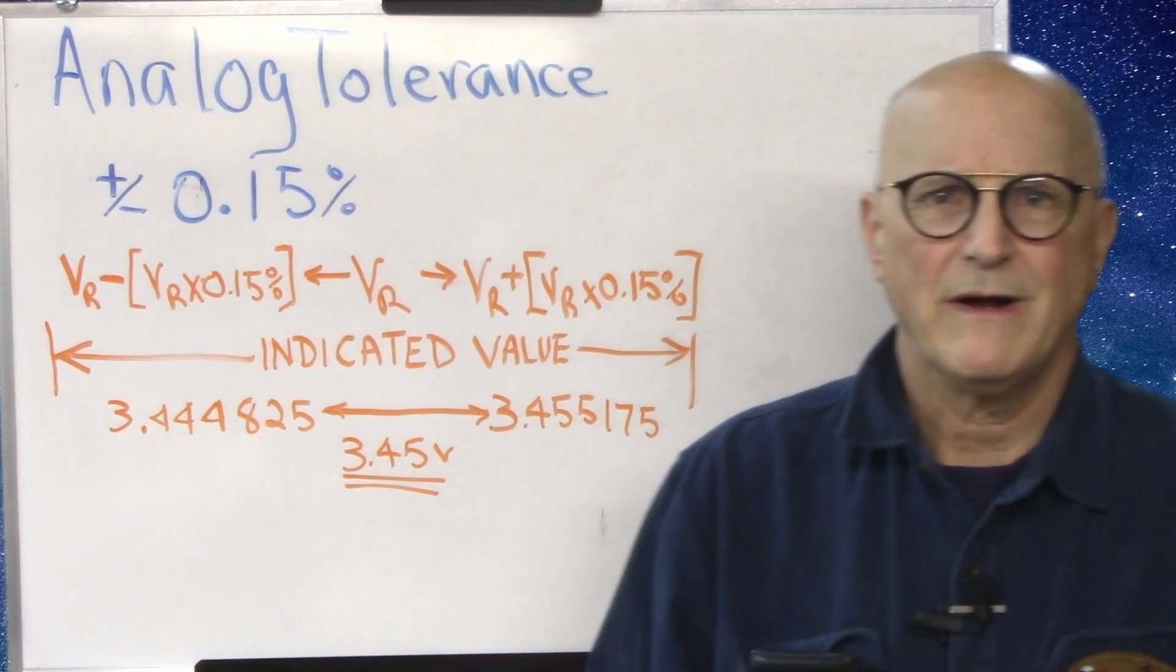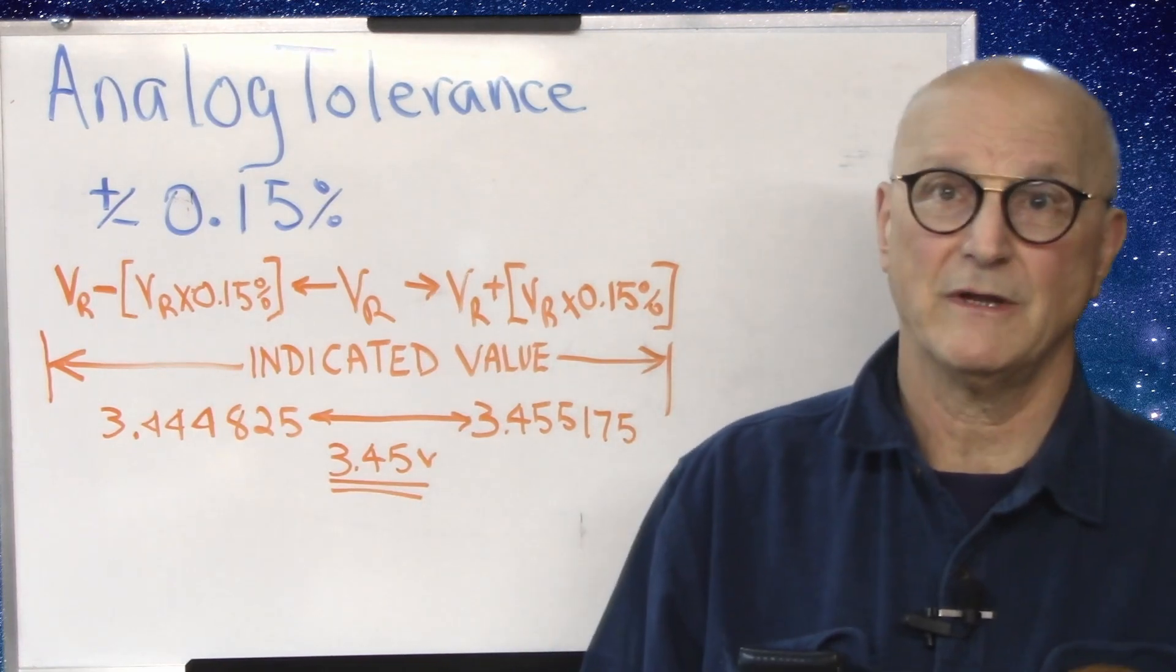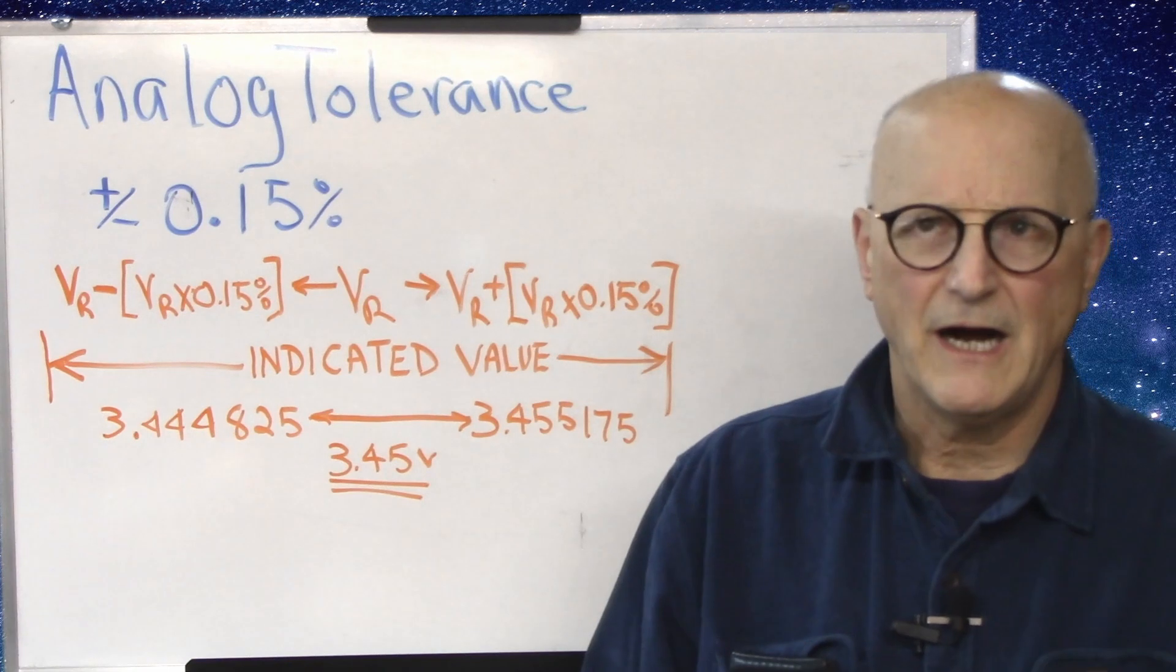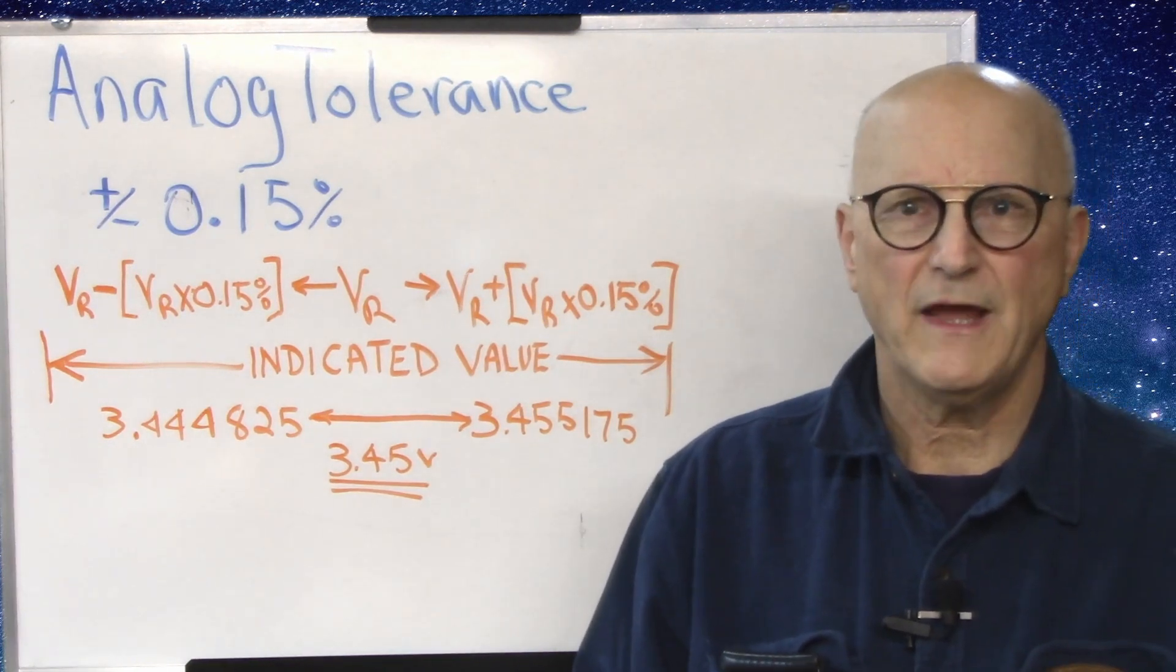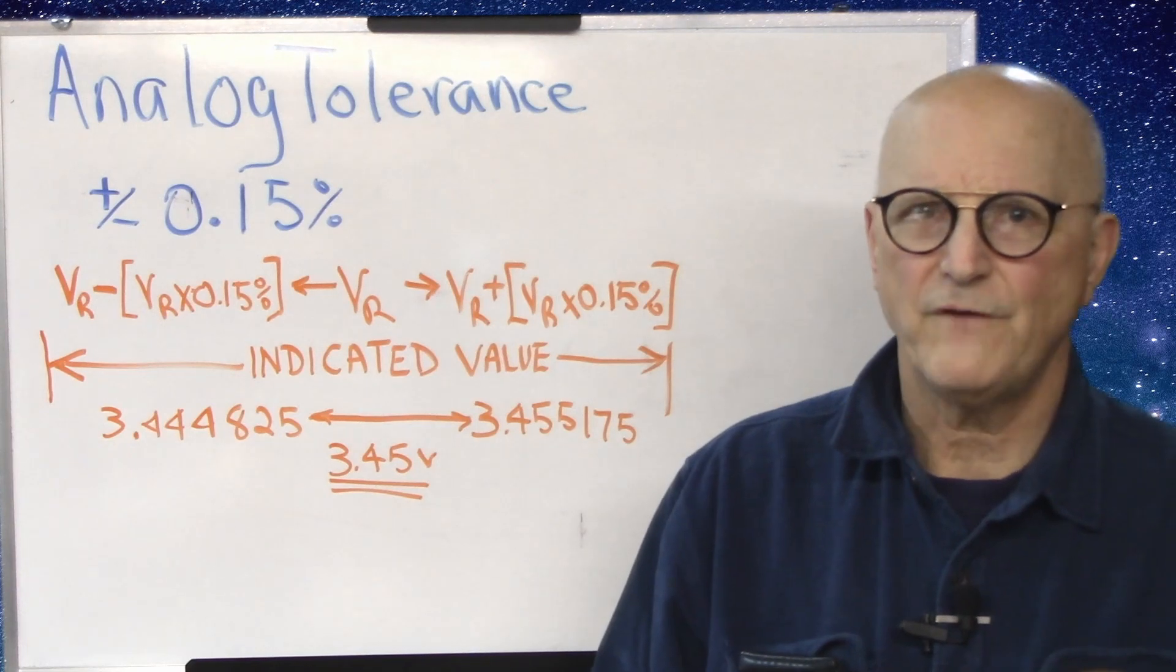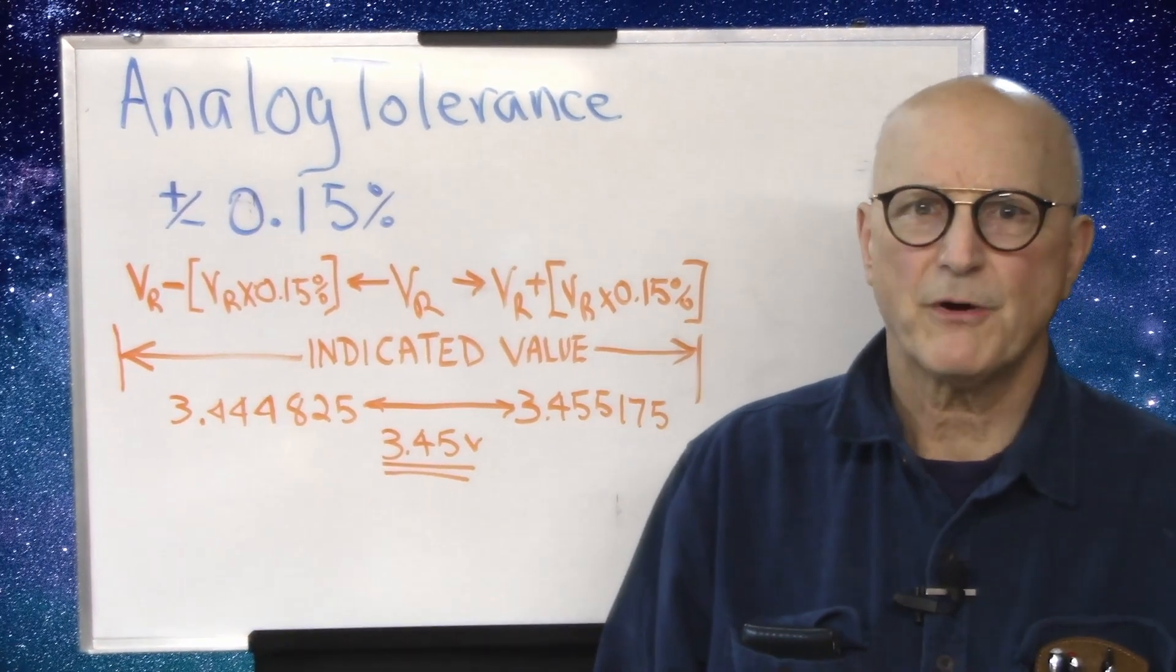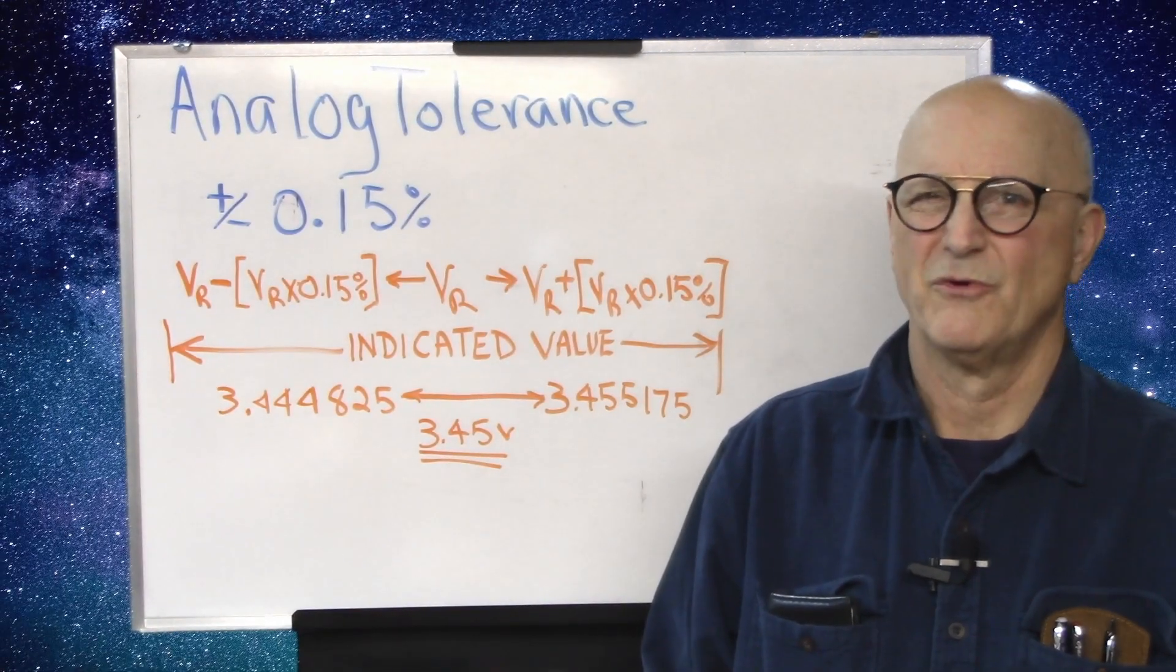So while it is impossible to calculate the real value from the indicated value unless you know how far off it is, you have the confidence that the indicated value is within 0.15 percent of the real value. So far this makes perfect sense. It's the digital part that is more of a head breaker.